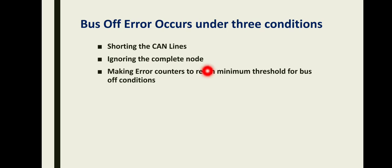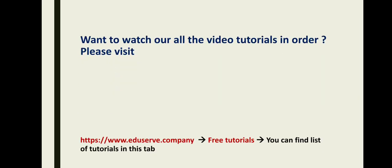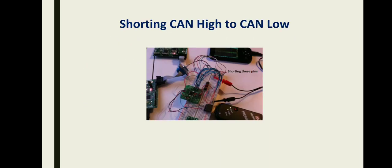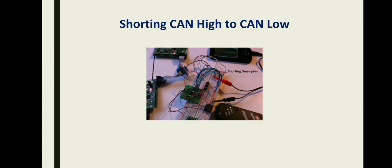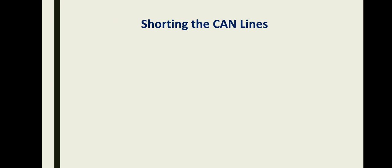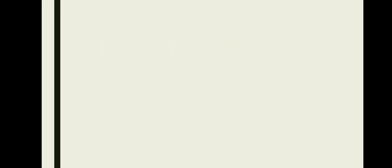The other two conditions — ignoring the complete node and making the error counters reach the minimum threshold — will be continued in upcoming tutorials. Shorting the CAN lines can be caused at the hardware level, while the other two conditions can be handled at the software level.